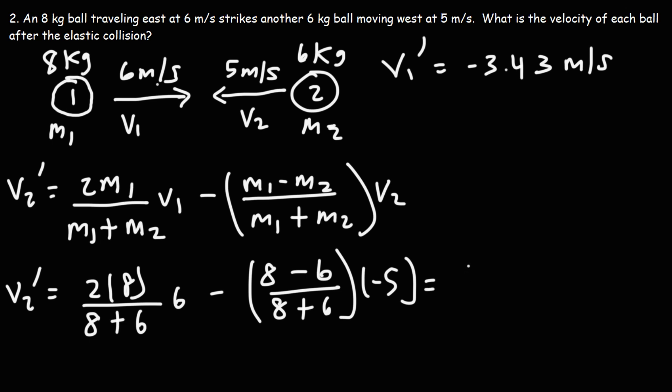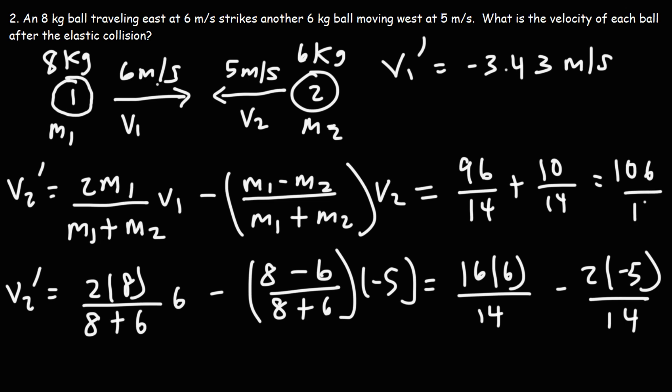So 2 times 8 is 16. 8 plus 6 is 14. 8 minus 6 is 2, and then we have a negative 5 next to it. And then the denominator is going to be the same. Now, 16 times 6, that's going to be 96. Negative 2 times negative 5 is positive 10. So we get 106 over 14. Turning that to a decimal, 106 over 14 is positive 7.57 meters per second.